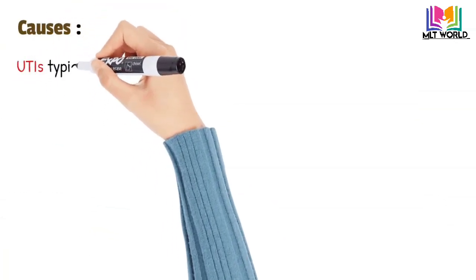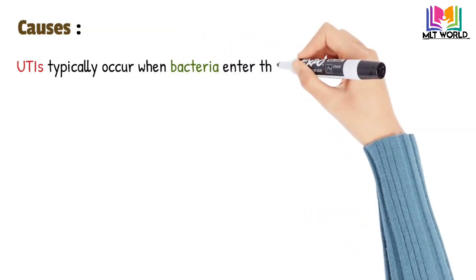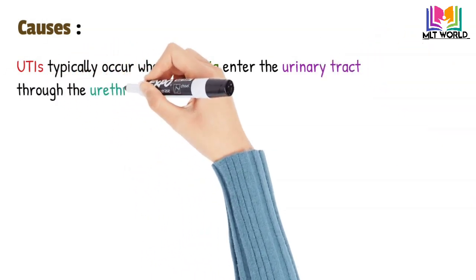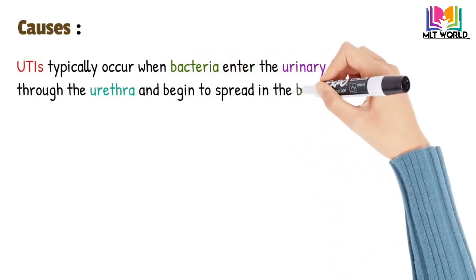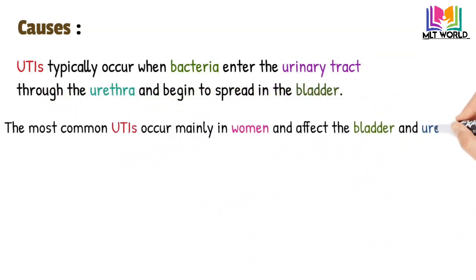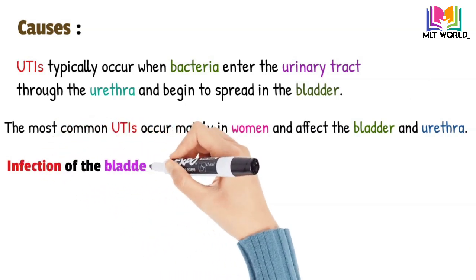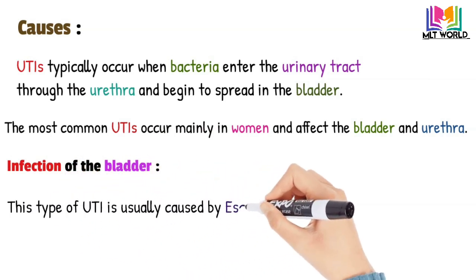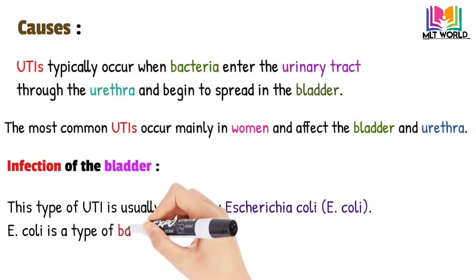Now, causes. UTI typically occurs when bacteria enters the urinary tract through the urethra and begins to spread in the bladder. The urinary system is designed to keep out bacteria, but the defenses sometimes fail, and when that happens bacteria may take hold and grow into a full-blown infection in the urinary tract. The most common UTI occurs mainly in women and affects the bladder and urethra. Infection of the bladder is caused by E. coli, a type of bacteria commonly found in the gastrointestinal tract.